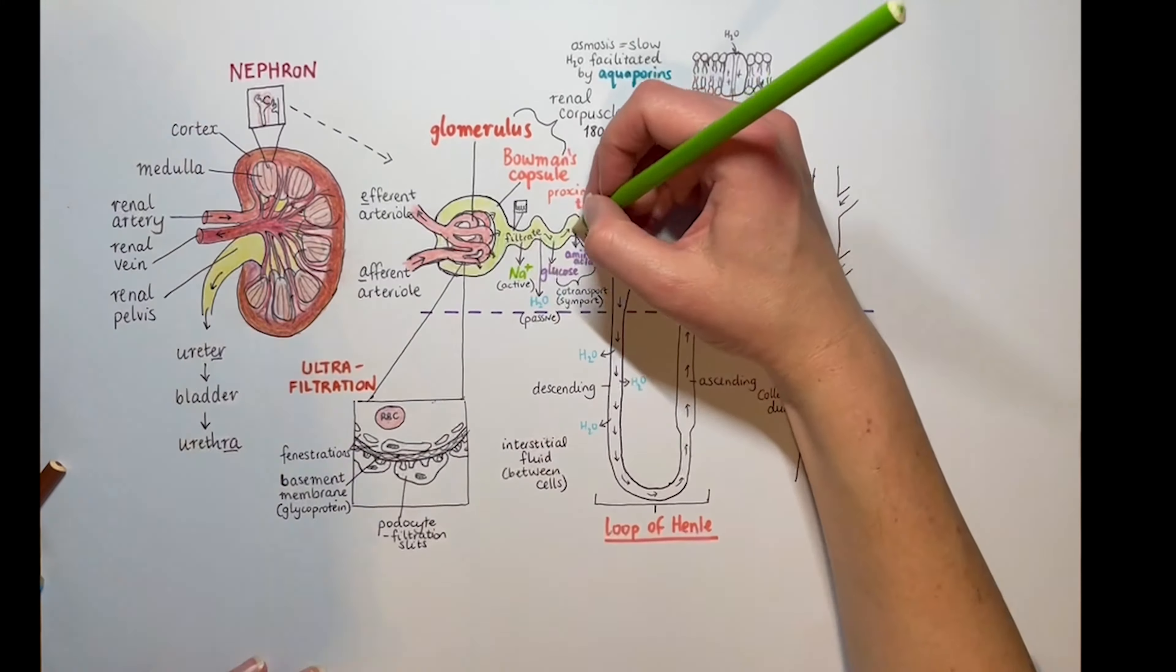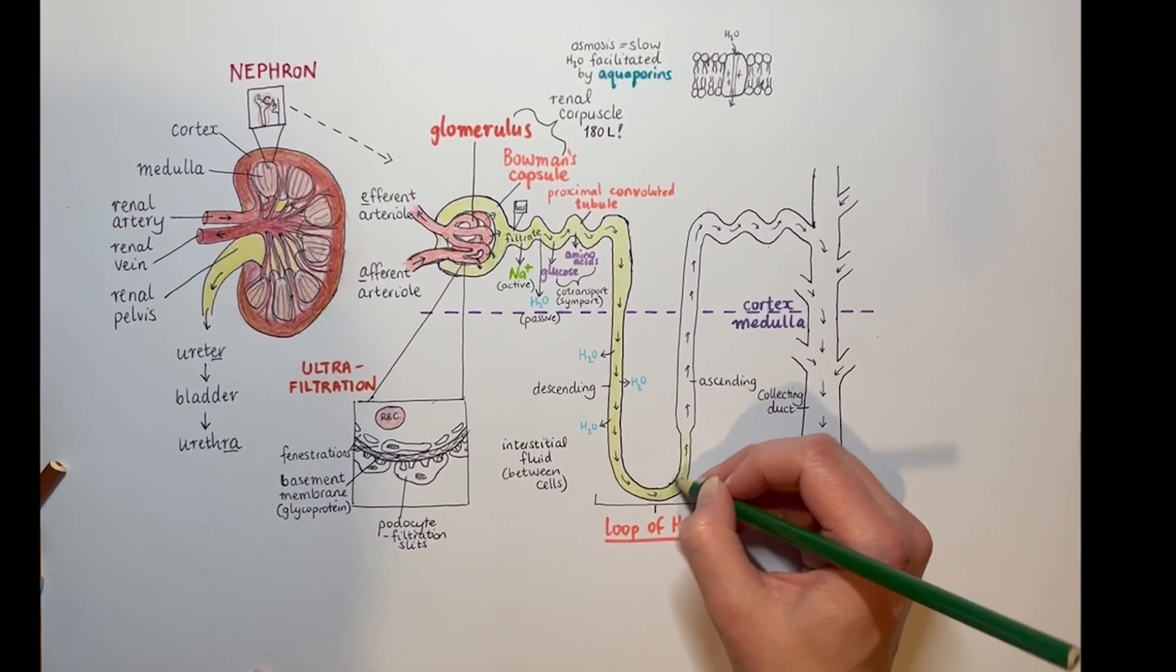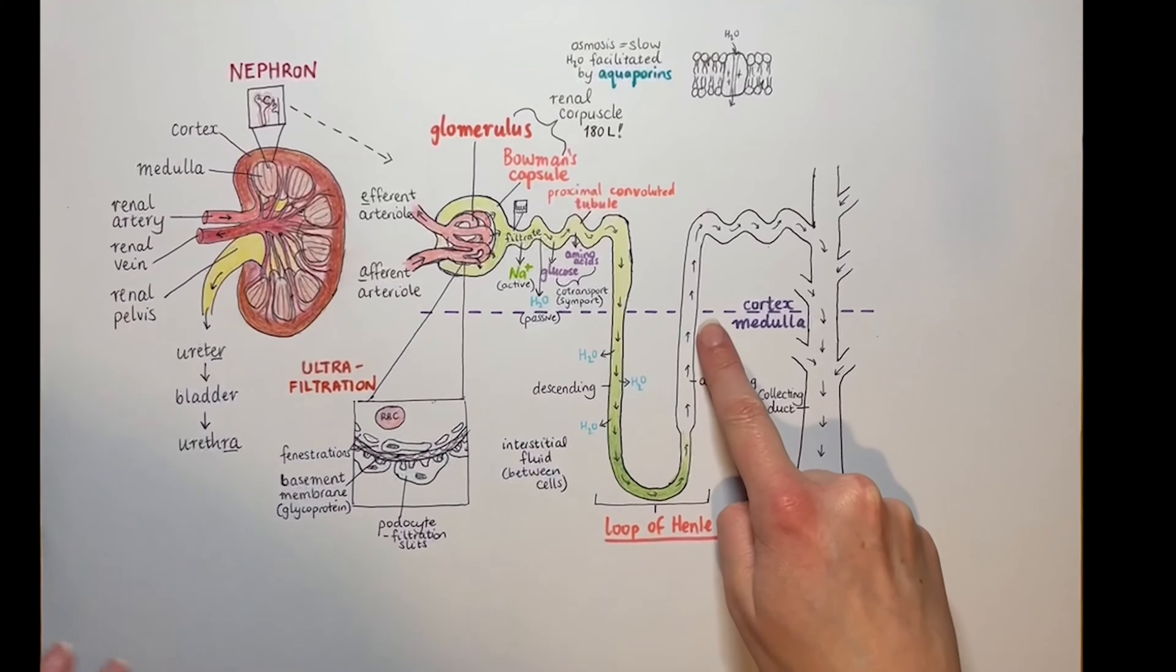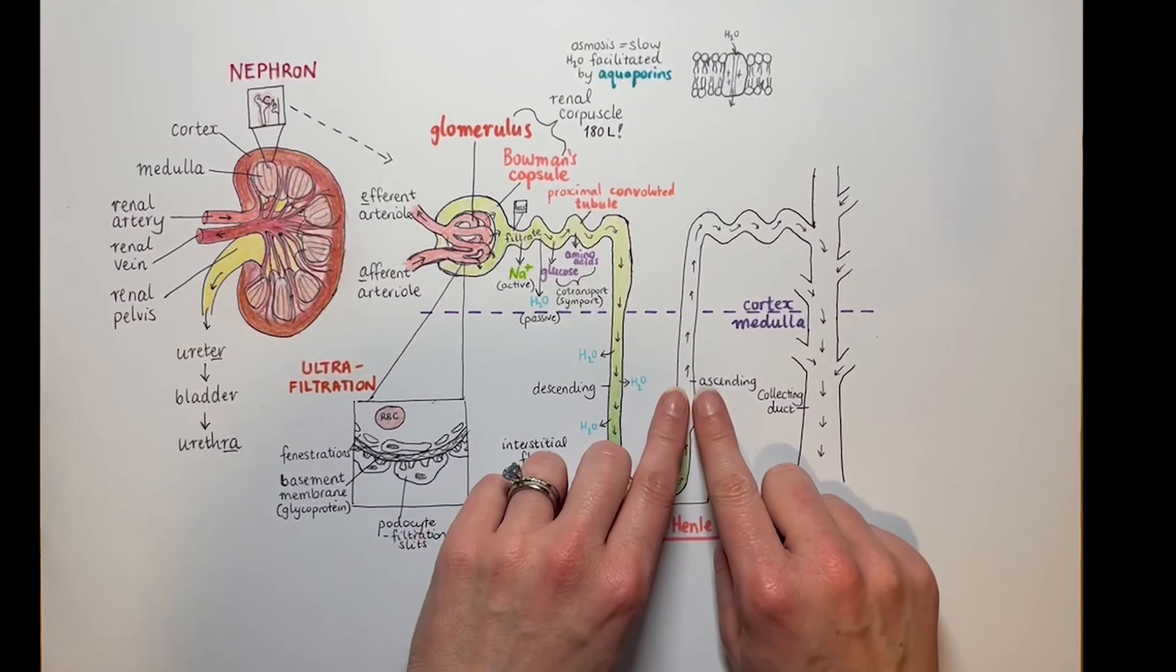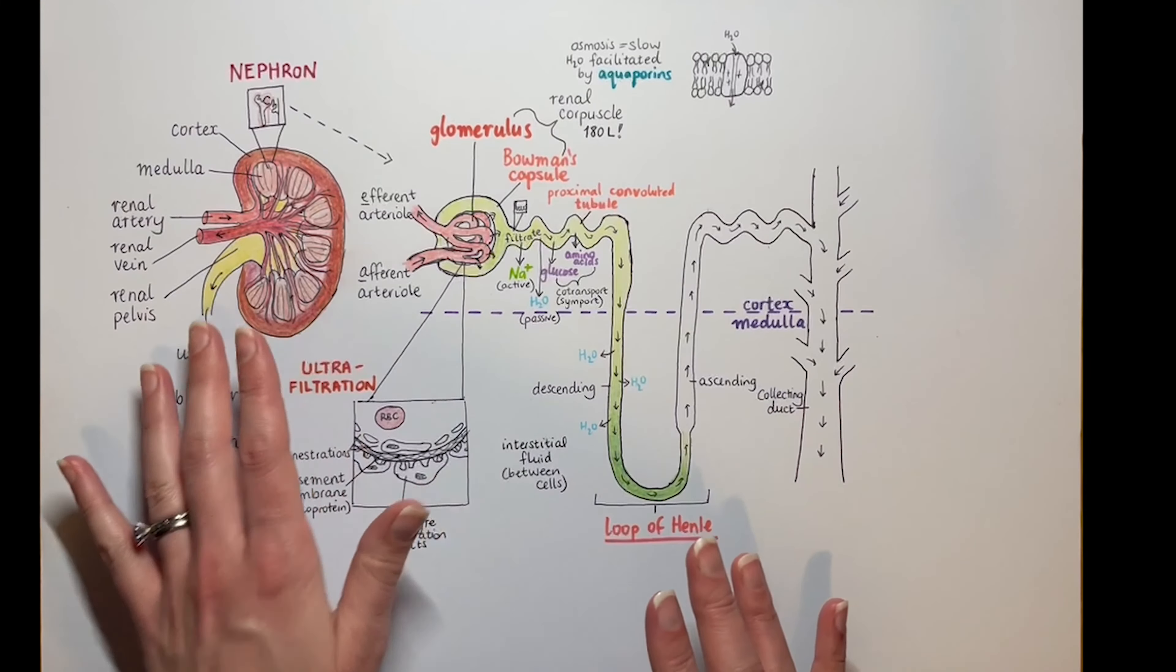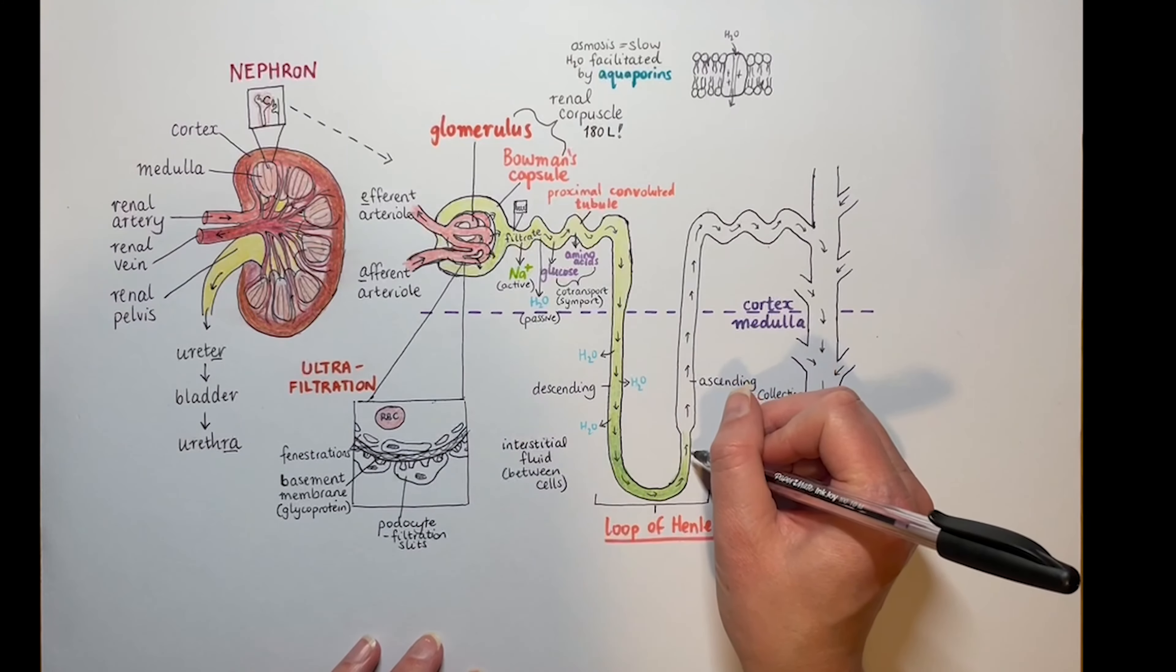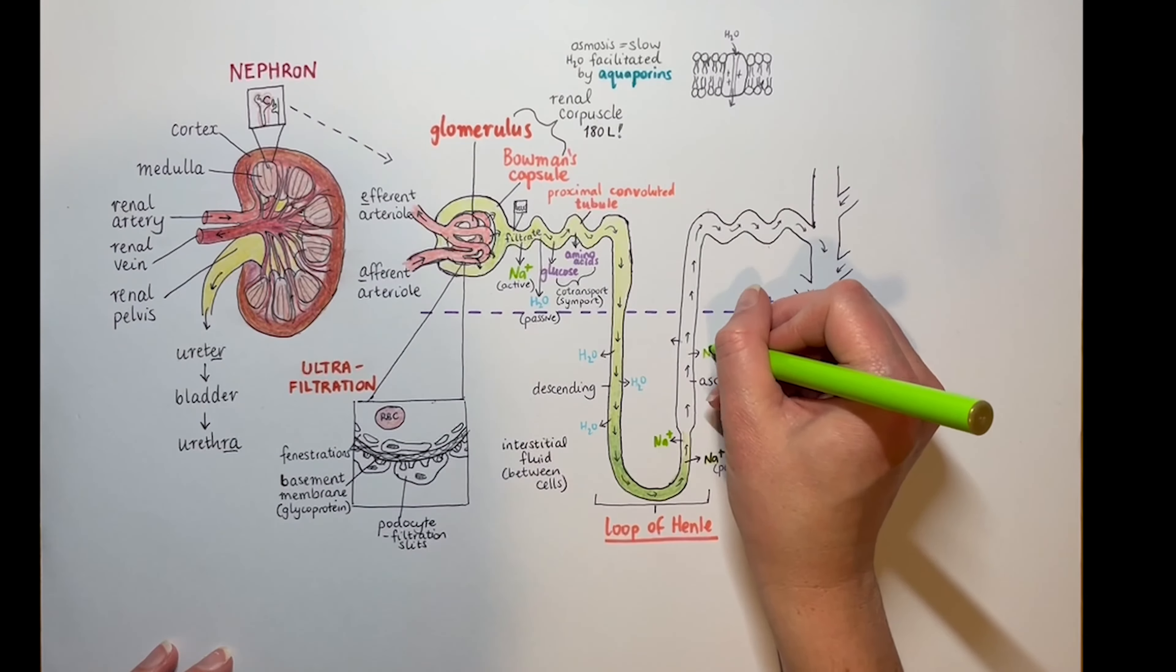So again, I've just used green as an arbitrary color so we don't confuse it with anything else. That's just to give us the visual we need. I hope you don't actually have green wee. Now, as we go back up the other side, these cells are permeable to salt but not water—the opposite of what we had on the descending side. Salt passively moves out in the thinner part at the bottom and is actively pumped out in the thicker top bit.